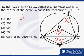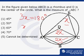So, I will get the value that 3x is equal to 180 degrees, or x comes out to be 60 degrees. So, the answer is option 3, which is 60 degrees.